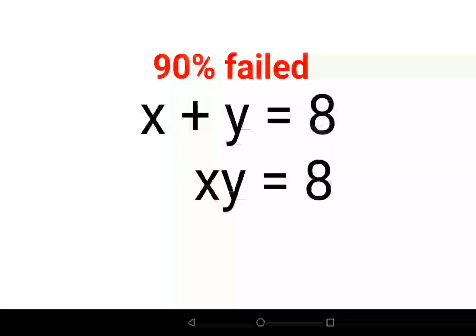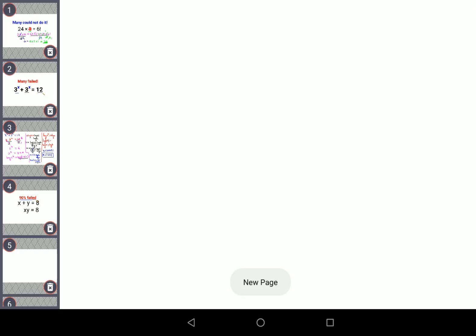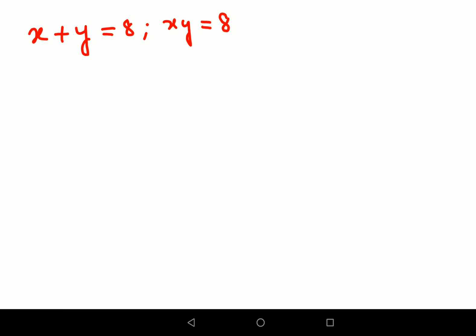Welcome everyone. Today we're going to solve this very nice problem — literally 90% of people failed this. What we have is x plus y equals 8 and x times y equals 8. In this kind of question, what we should first do is put everything in terms of one variable. So instead of y, I can write y equals 8 minus x.